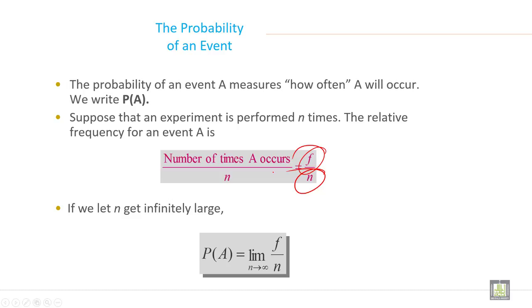If we let N get infinitely large, probability of A equals limit N to infinity frequency divided by N. This is the formula of probability of A.